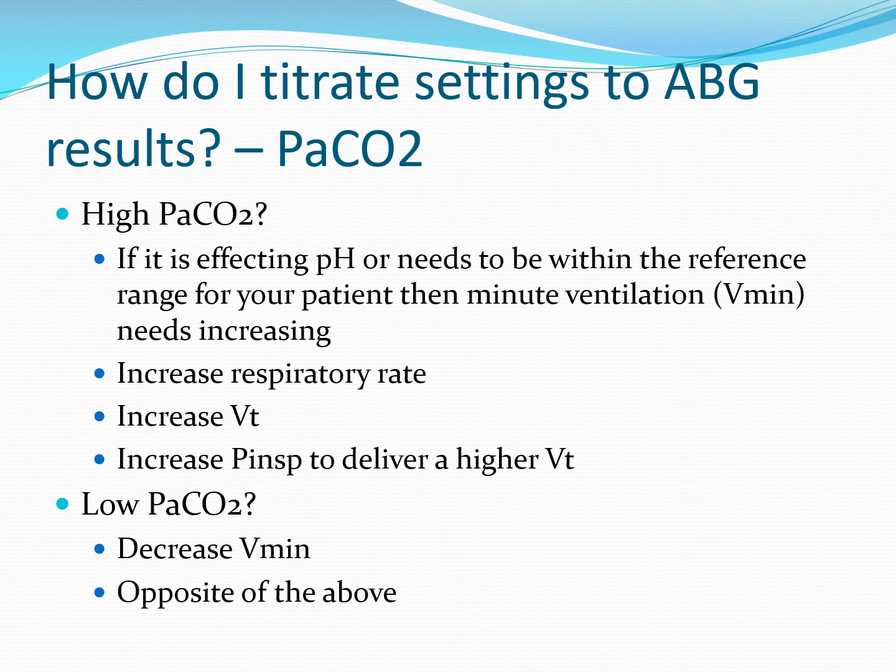If your CO2 is high and it's affecting the pH of your patient, or for whatever reason needs to be more tightly controlled within the reference range, then you need to increase the minute ventilation. You can do this in a number of different ways: you can increase the respiratory rate, increase the tidal volume, or if you're using a constant pressure-generating mode such as BiPAP or pressure control ventilation, you can increase the inspiratory pressure to deliver that higher tidal volume. If you've got a low CO2, do the opposite.